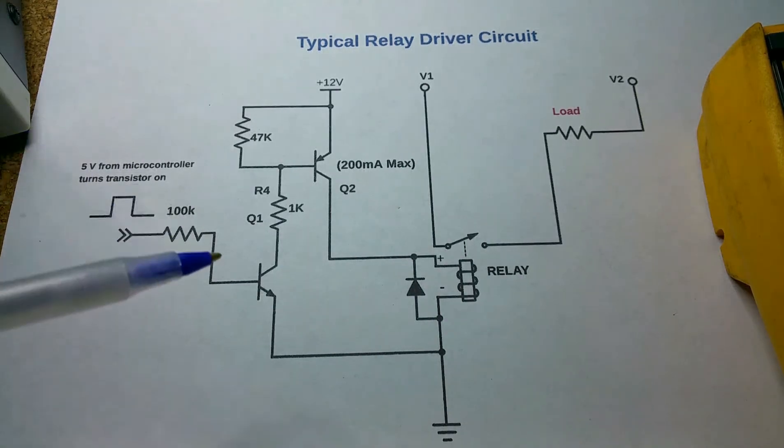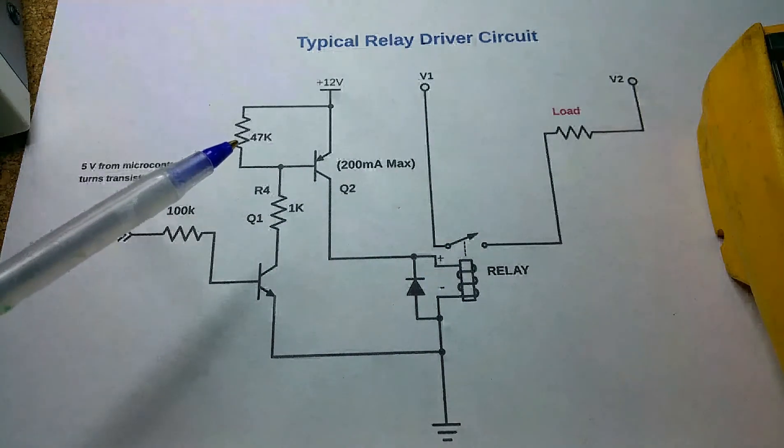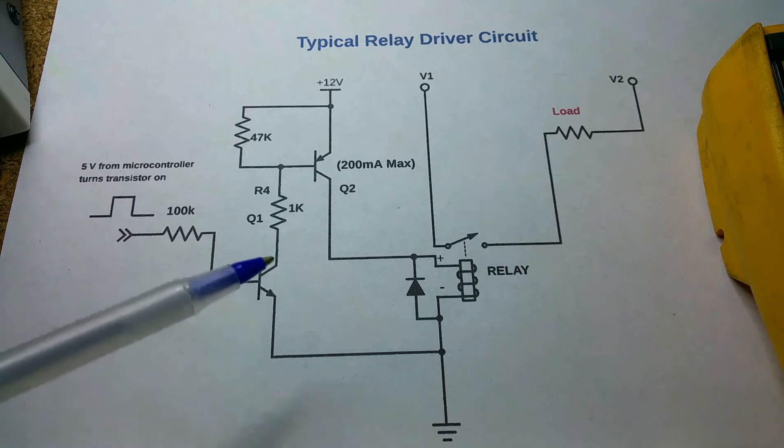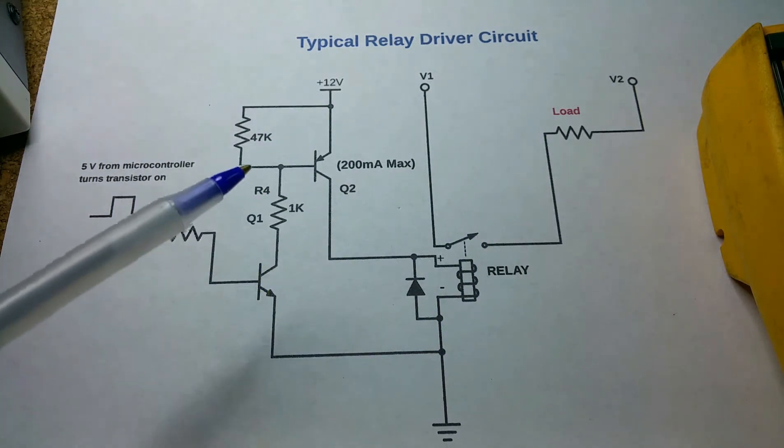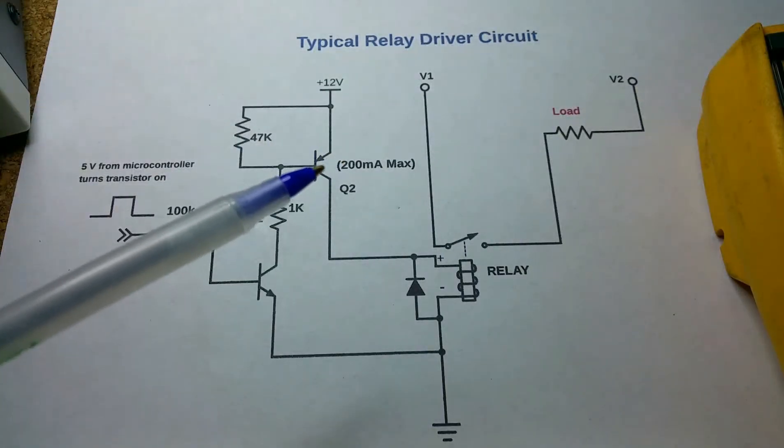A couple of things to mention about the circuit here is this resistor, the 47k, is there to pull the base of this transistor up when this transistor is turned off. So when the microcontroller is at zero this transistor is off, we need to make sure that the base of this transistor goes up high so that this transistor stays off.